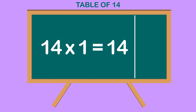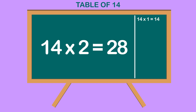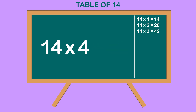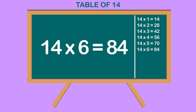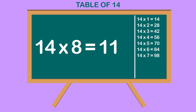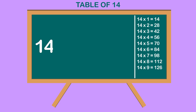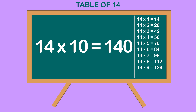Table of 14. 14 1s are 14. 14 2s are 28. 14 3s are 42. 14 4s are 56. 14 5s are 70. 14 6s are 84. 14 7s are 98. 14 8s are 112. 14 9s are 126. 14 10s are 140.